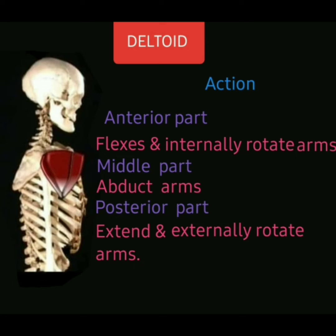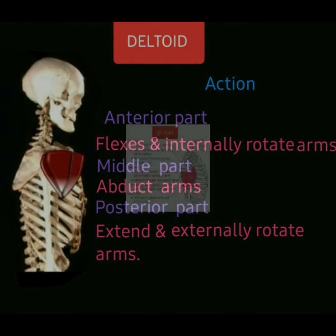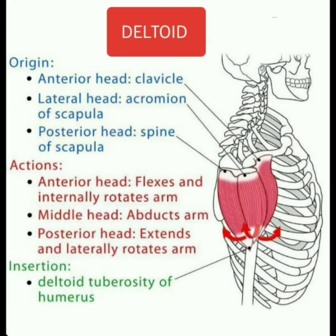The anterior part flexes and internally rotates the arm. The middle part abducts the arm. The posterior part extends and externally rotates the arm. This image shows the total deltoid muscle origin with the anterior head, lateral head, and posterior head, along with the actions and insertion of the deltoid muscle.